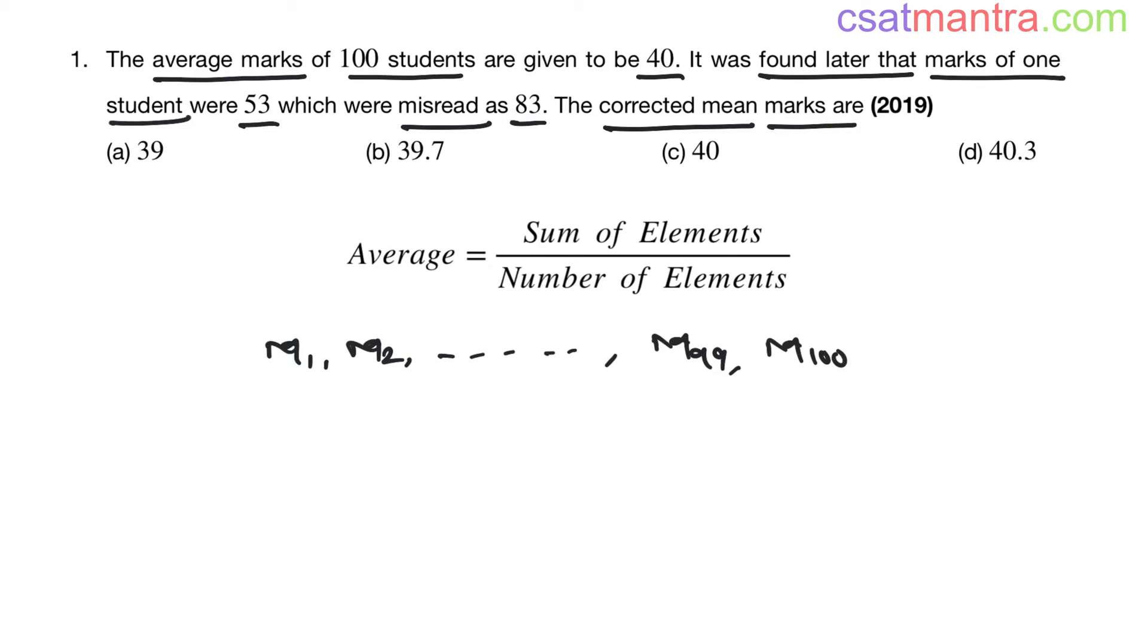Now, let us assume marks of 100 students as M1, M2, up to M99 and M100. It was found later that marks of one student were 53, which were misread as 83. Let us call that student the 100th student. His marks are M100.